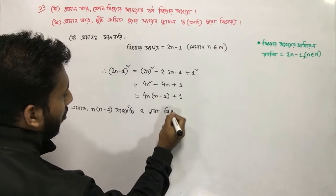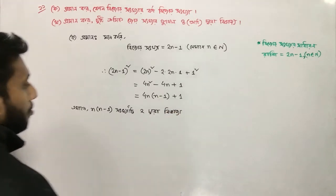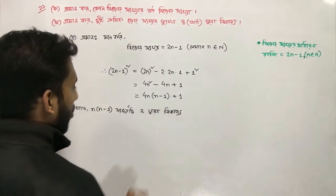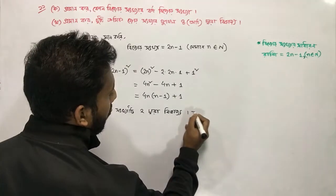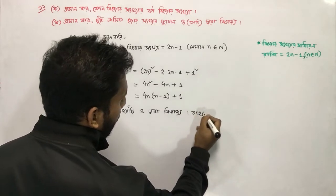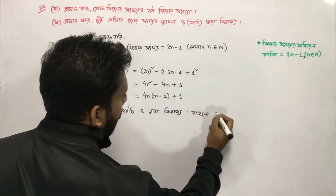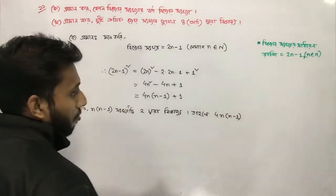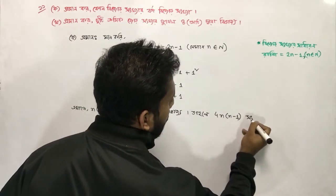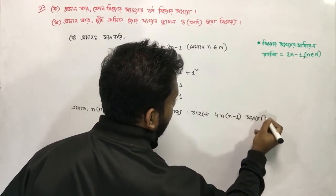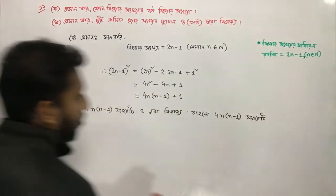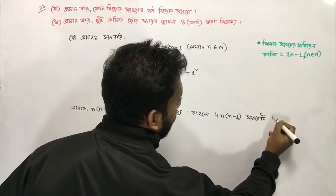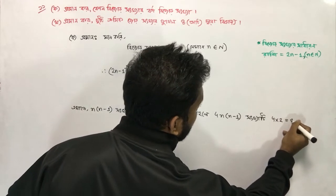2, 2, 3, 4, 4. n into 1, 2, 3, 4. n into n minus 1. n into 2 is equal to 8.